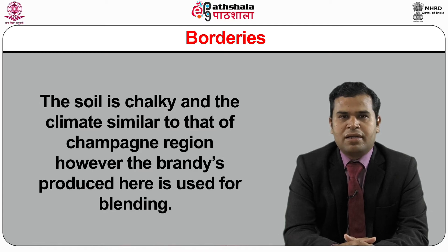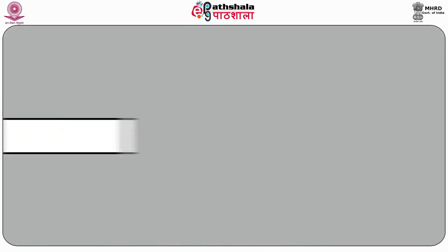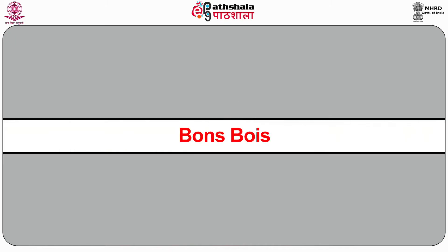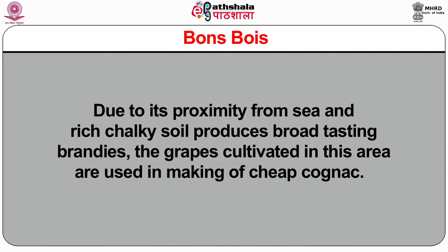However, the brandy produced in Borderies is used for blending. The fourth region is Fins Bois, located in southwest France. The soil is similar to surrounding Cognac-producing regions but has more gravel. Brandies produced here have a fruity and complex bouquet. They mature quite quickly and are mostly used as blends. The fifth region is Bons Bois — due to its proximity to the sea and rich chalky soil, it produces broad-tasting brandies. The grapes cultivated here are used in making cheap Cognacs.